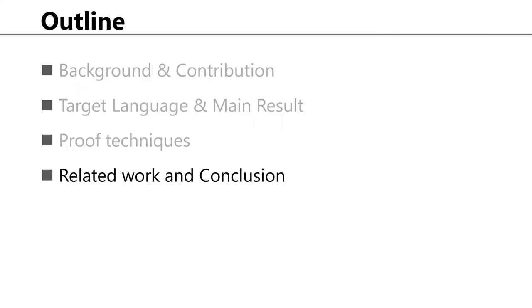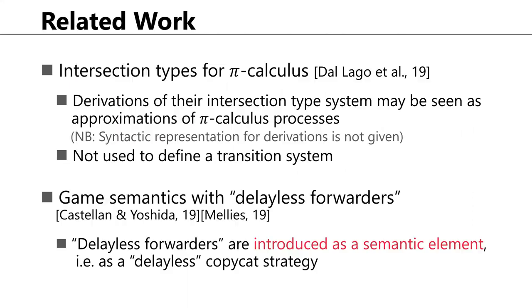I should clarify that we are not the first to create an intersection type system for the pi calculus. An intersection type system for pi calculus has been proposed by Dagnino et al., and derivations of their intersection type system may be seen as approximations of processes. Also, the idea of delayless forwarders already appears in the context of game semantics as delayless copycat strategies, though it is still unclear how these relate to our work.